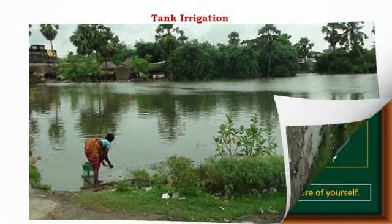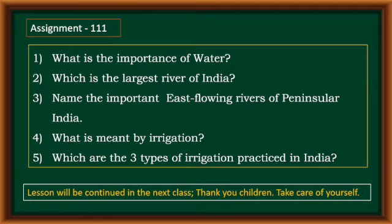That is all for today. We will continue this lesson in the next class. Assignment number 112: What is the importance of water? Which is the largest river of India? Name the important east flowing rivers of Peninsular India. What is meant by irrigation? Which are the three types of irrigation practiced in India? Practice these questions and learn them.